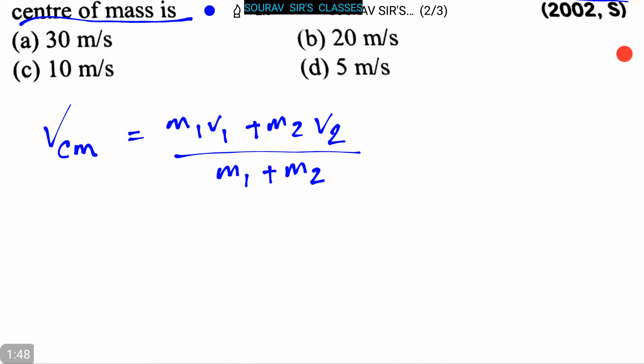Putting the values of m1, v1, m2, and v2, we can write this as 10 into 14 plus 4 into 0 divided by 10 plus 4. By simplifying this we get 140 by 14, which is 10 meter per second.